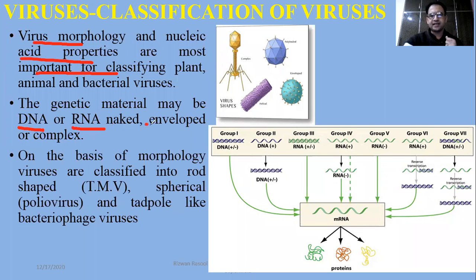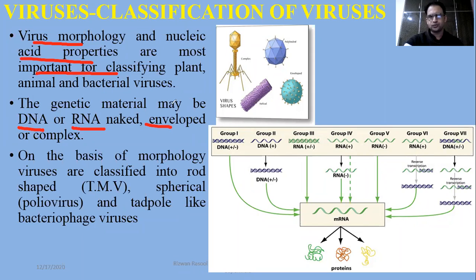Based on the envelope, viruses can be classified as enveloped or naked. Enveloped viruses have a lipoprotein envelope — for example, HIV is an enveloped virus. Those without this envelope are called naked viruses.